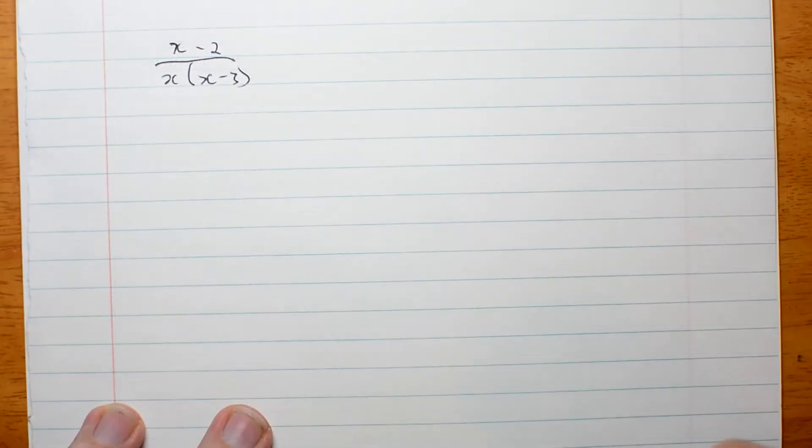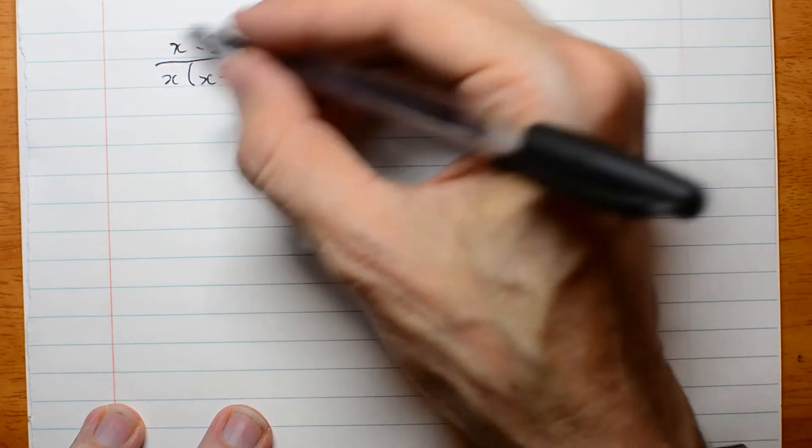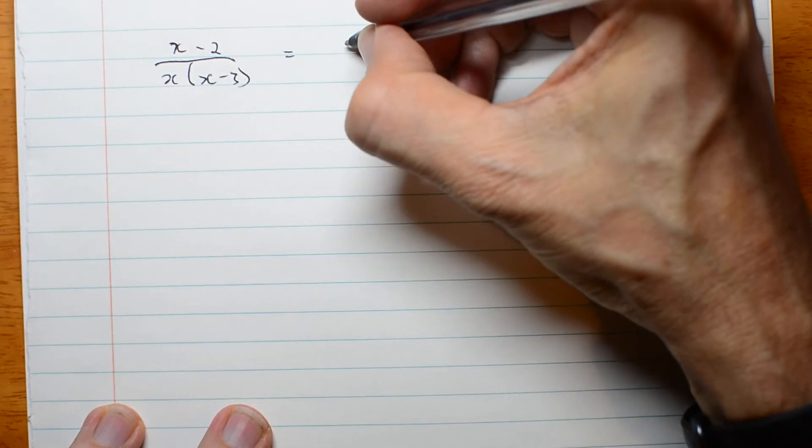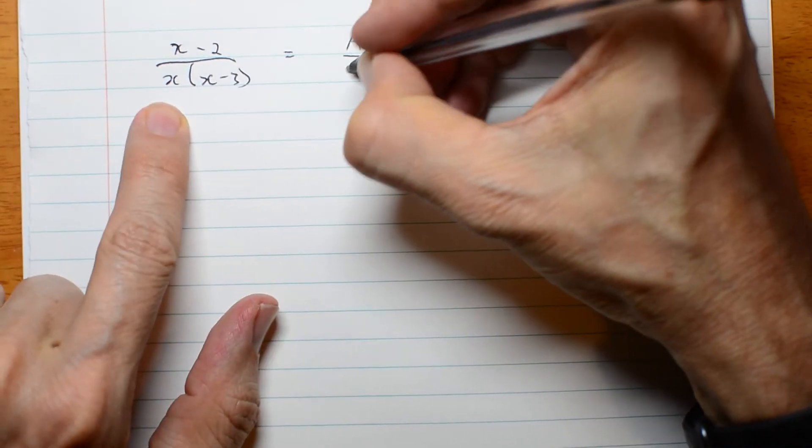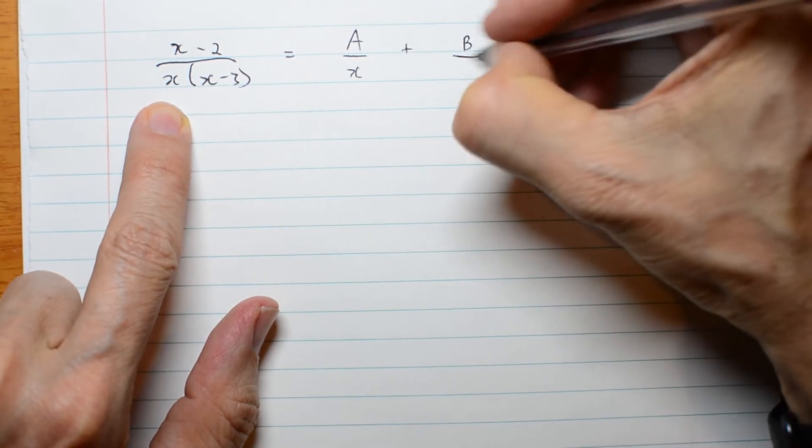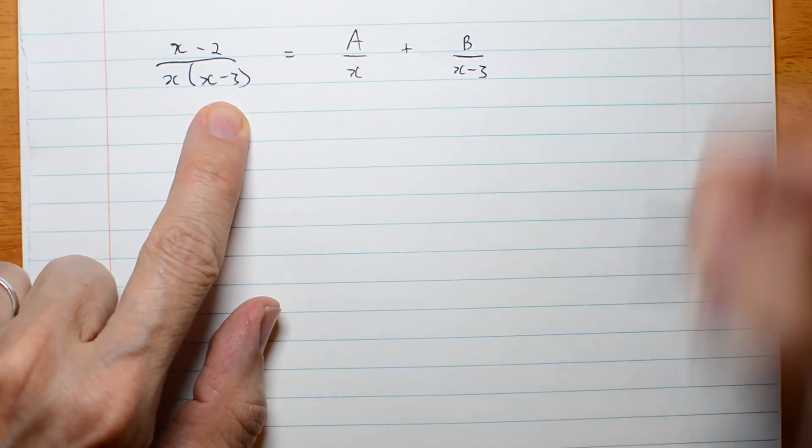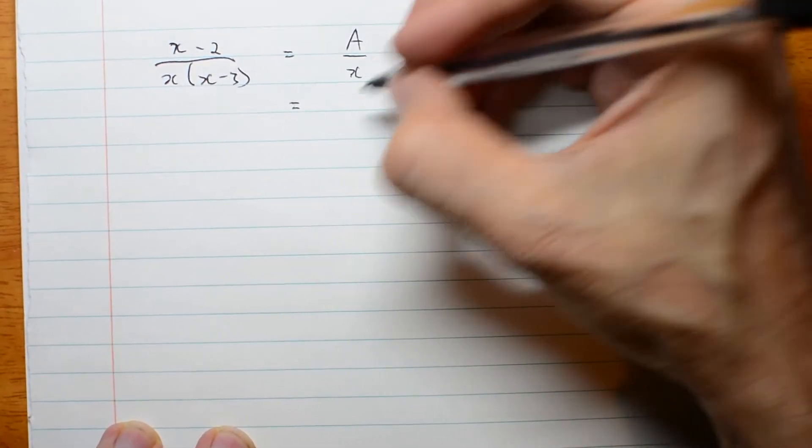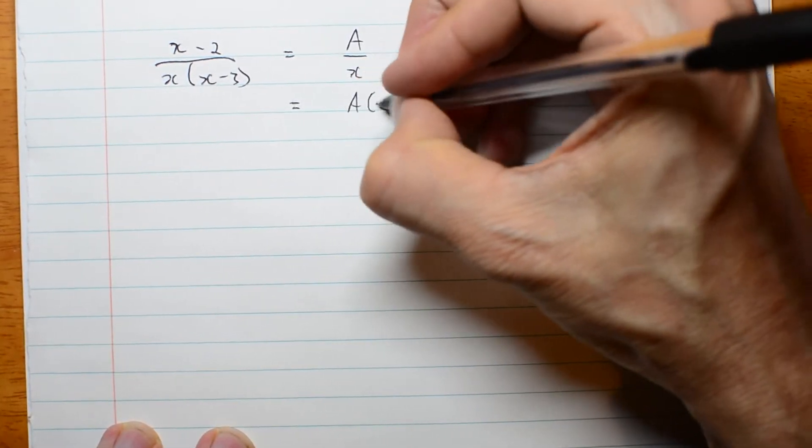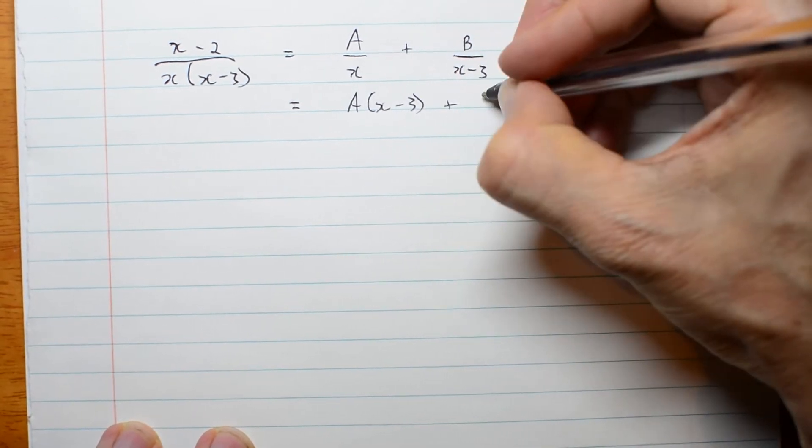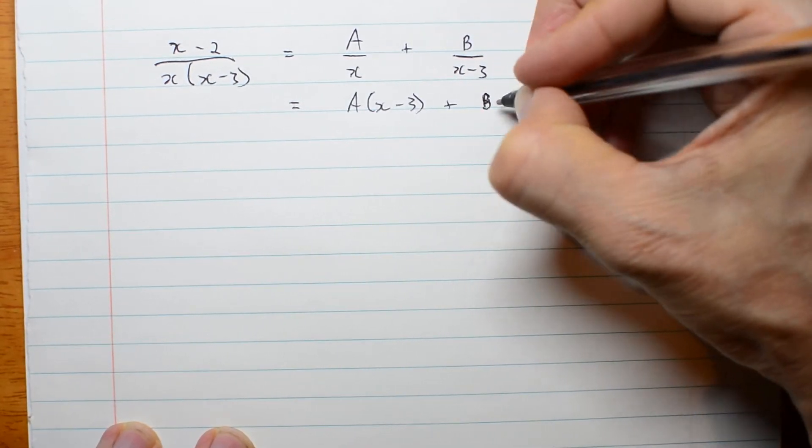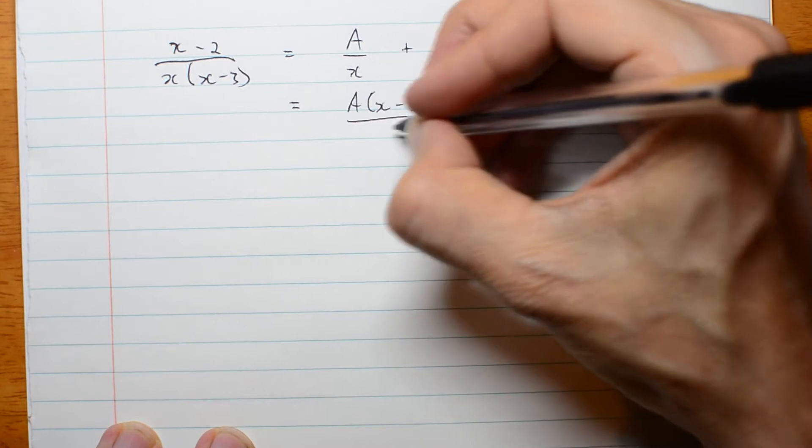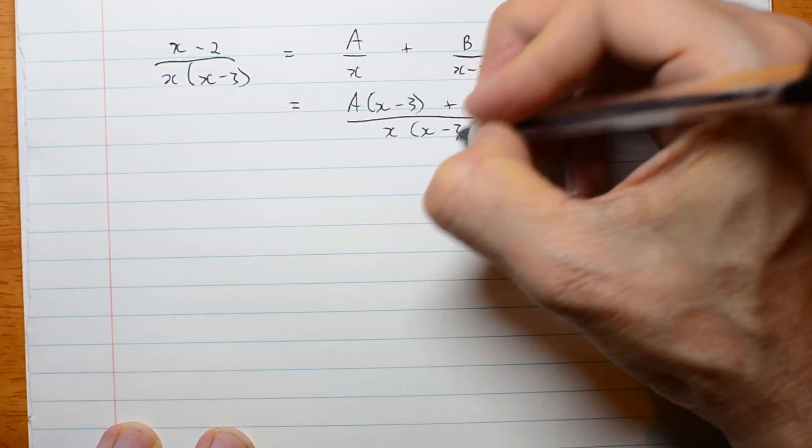Shall we try another? I want to write this in the form a over x plus b over x minus 3. Well, let's do the fraction addition.